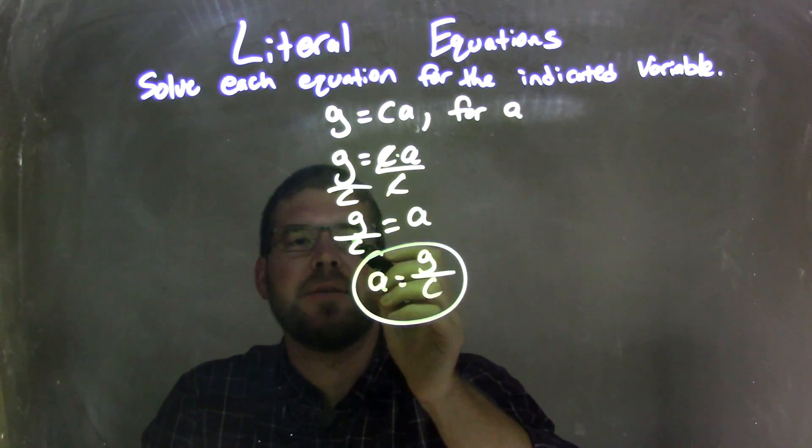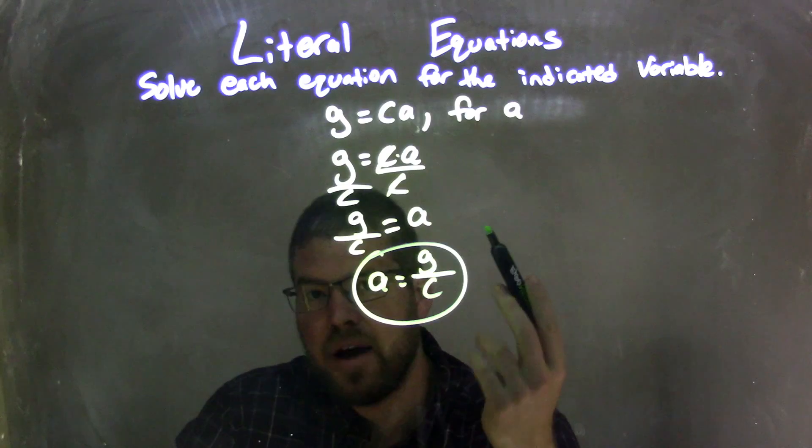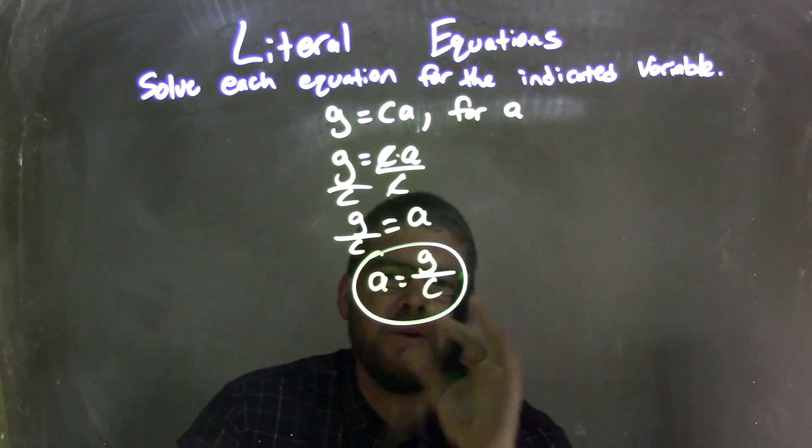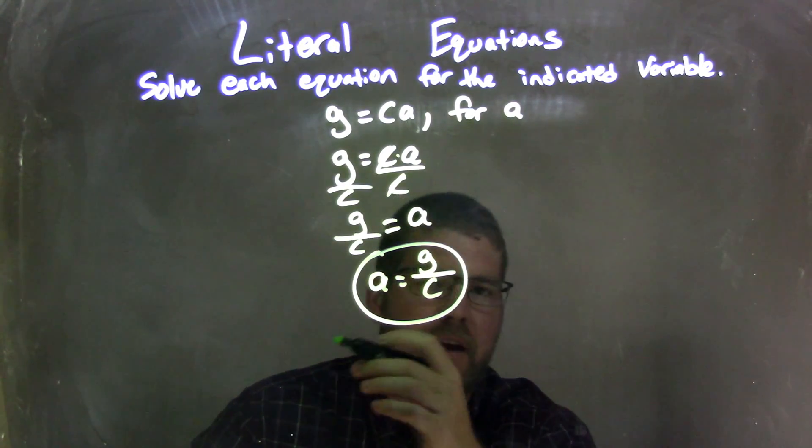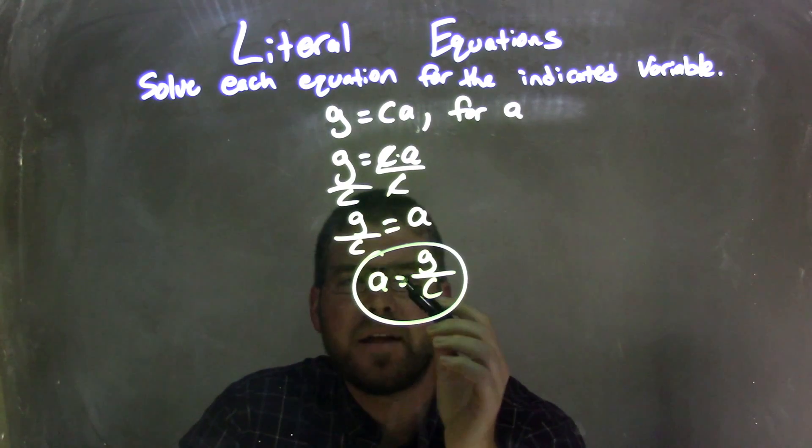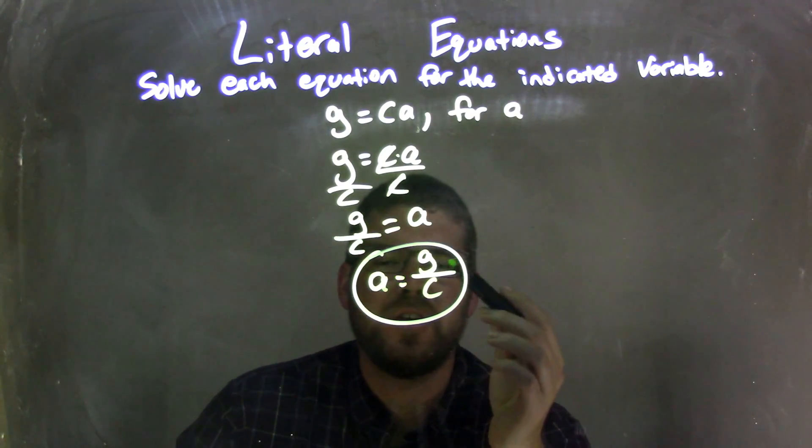Leave me with G over C equals A. A is isolated. It's by itself already, so I rewrote it and have A come first, because that looks nicer and cleaner. And so our final answer here is A equals G over C.